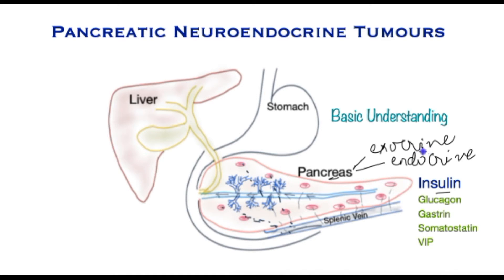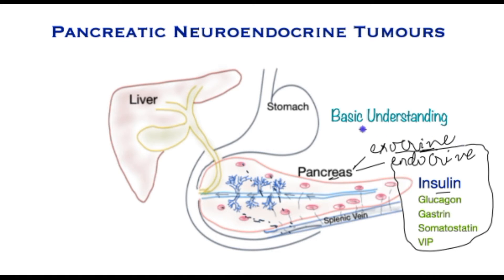The common variety of pancreatic cancer is in the exocrine glands, which are throughout the pancreas and connected to the duct. When cancers arise in the endocrine cells — those that produce hormones — this condition is called a neuroendocrine tumour, because these tumours are fundamentally different from those connected to the duct, called ductal adenocarcinoma.